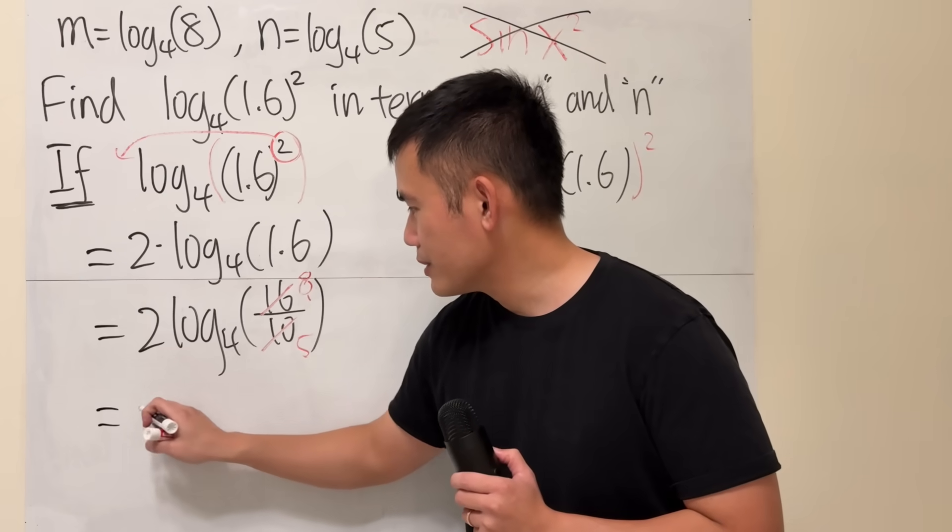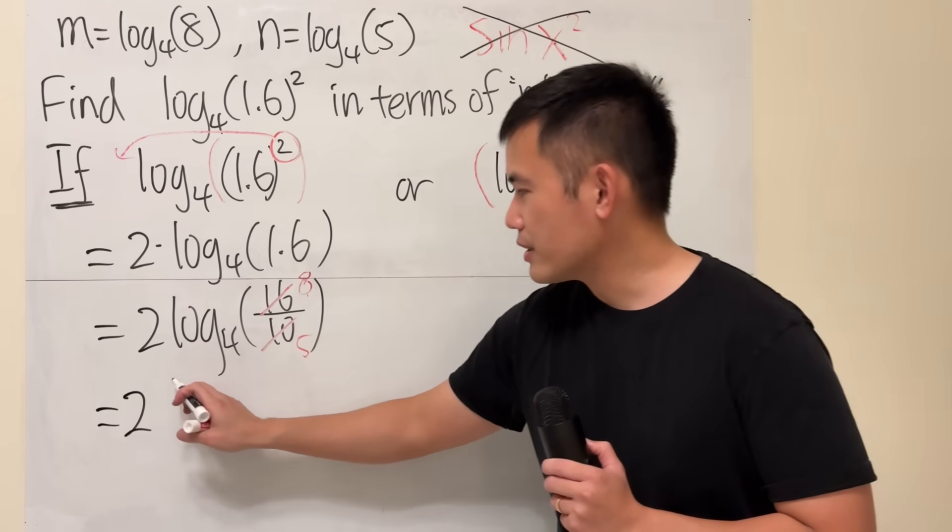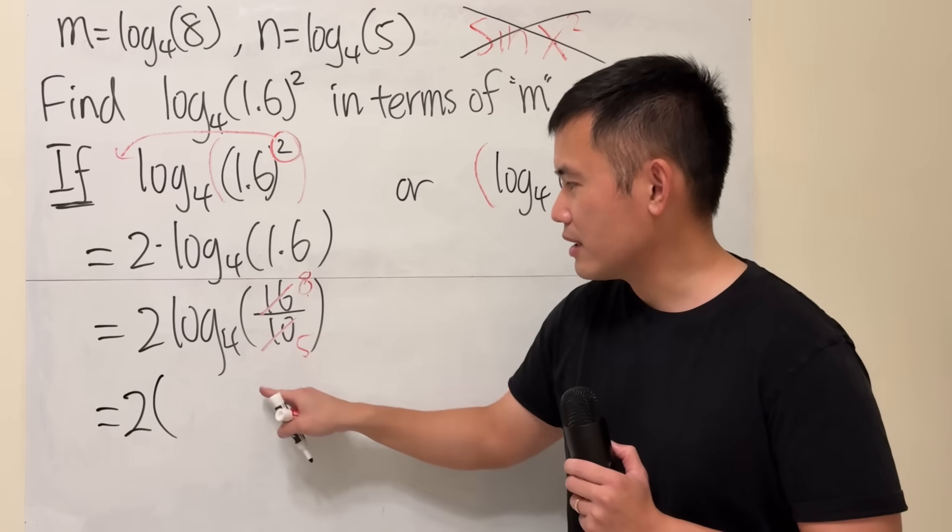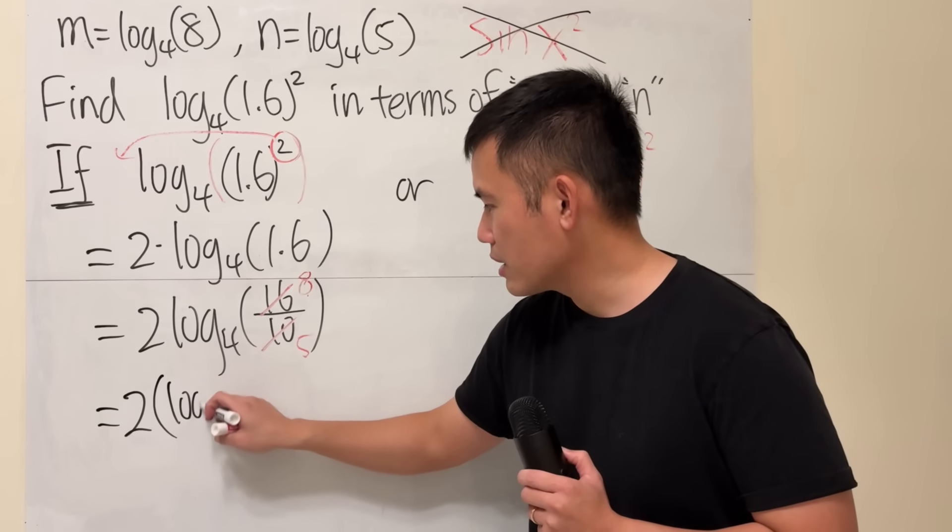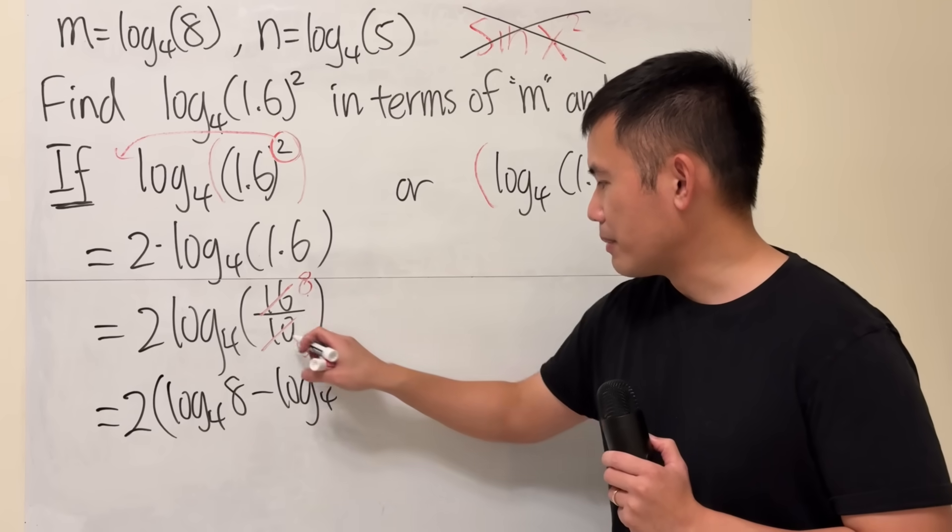Furthermore, we can use the log property because we have a division inside, so this means you have to apply the log property here. That's log base 4 of the first subtract log base 4 of the bottom.